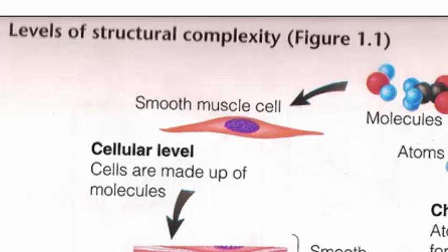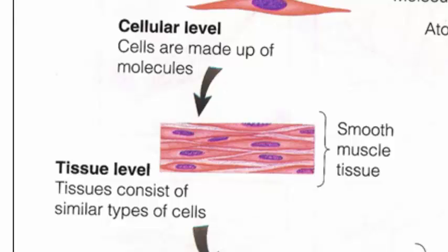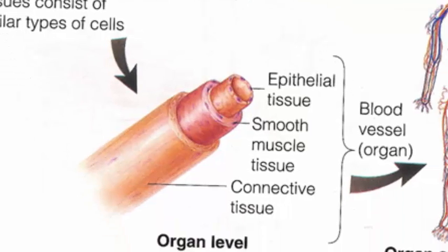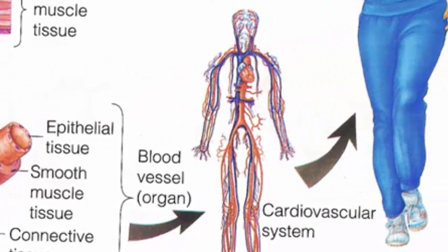These smooth muscle cells, all of similar structure and working towards a common goal, then come together to form smooth muscle tissue. Tissue is then used to create organs. In the case of this diagram, the example is a blood vessel made up of three types of tissue: connective tissue, smooth muscle tissue, and epithelial tissue. Finally, the blood vessels work as part of an organ system with other blood vessels and the heart to pump the blood throughout the body.